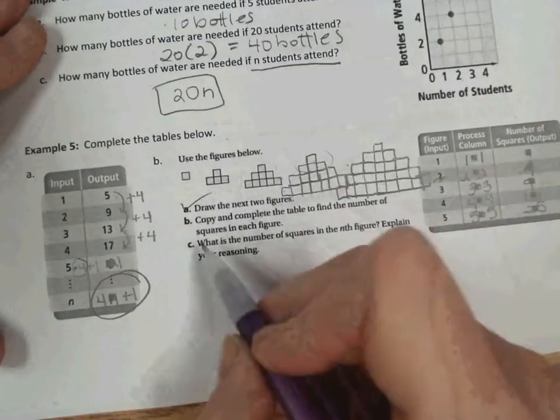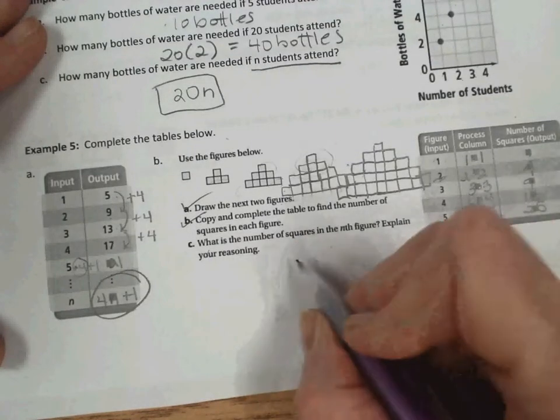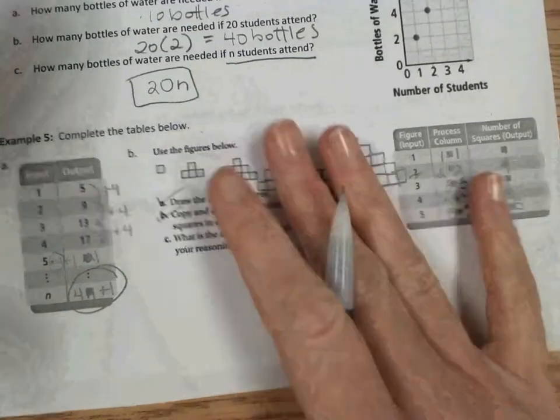So we have then for the nth input, the output would be 4n plus 1. Back to part B. We need to write that rule as well. We copied and now we need to write our rule, which would be n times n or n squared.